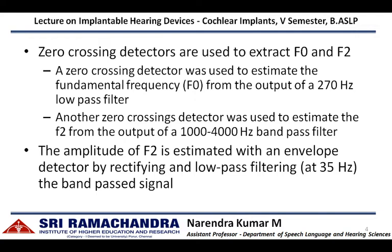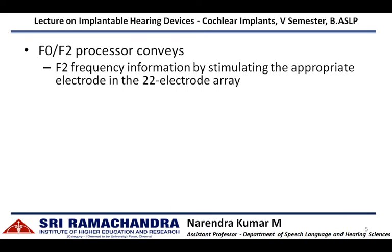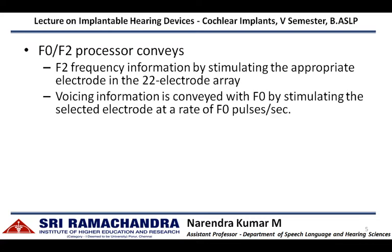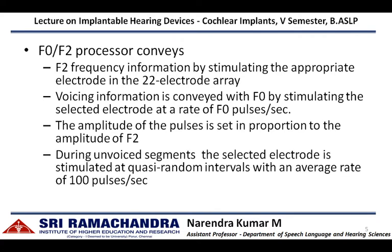So the F0-F2 processor extracts the fundamental frequency, the second formant frequency, and the amplitude variation of the second formant across time. It conveys the second formant frequency by stimulating the appropriate electrode in a 22-channel electrode array. The voicing information is conveyed via the fundamental frequency by stimulating the selected electrode at a rate of F0 pulses per second. For example, if 120 Hz is extracted as the fundamental frequency, the electrode corresponding to the second formant fires at 120 pulses per second, with pulse amplitude proportional to the amplitude of F2. During unvoiced segments, the selected electrode is stimulated at a quasi-random period with an average rate of 100 pulses per second.